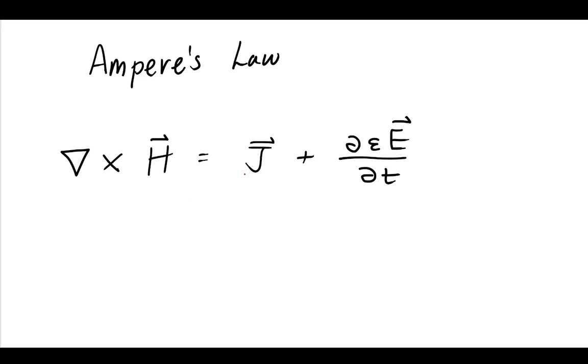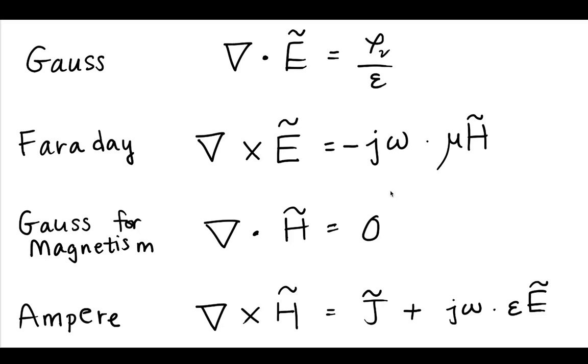Ampere's law, very similar to Faraday's law. But again, we have this time derivative. And we know that that time derivative can be turned into a j omega. And so these are Maxwell's equations in the phasor domain. Thank you, and I will see you in the next video.